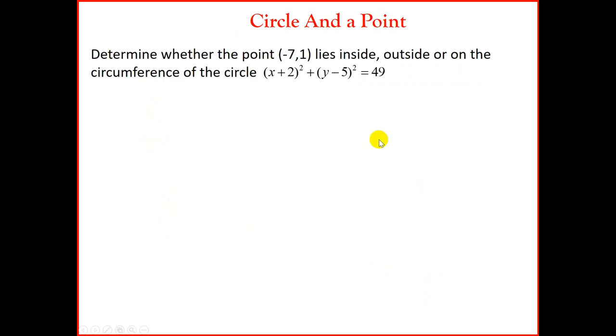Let's look at an example. Determine whether the point (-7, 1) lies inside, outside, or on the circumference of the circle. The circle is given by (x+2)² + (y-5)² = 49.